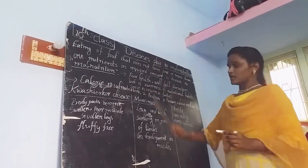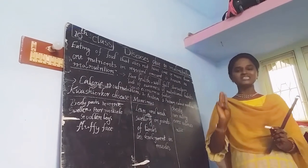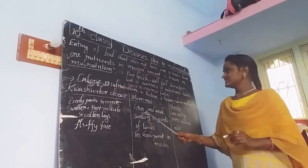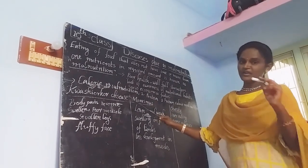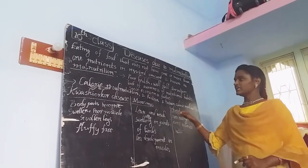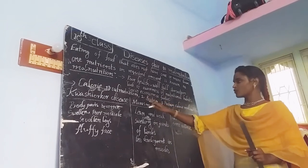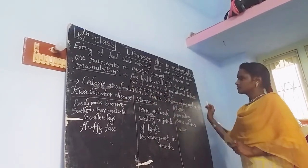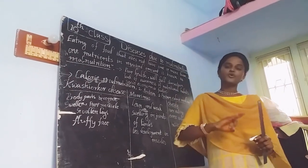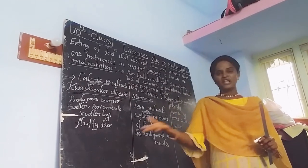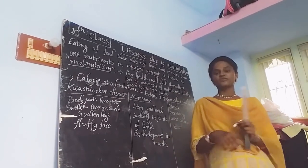When talking about different varieties of malnutrition in children, malnutrition is categorized into three types: calorie malnutrition, protein malnutrition, and protein-calorie malnutrition.